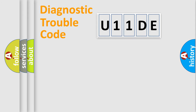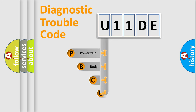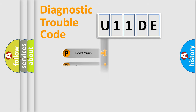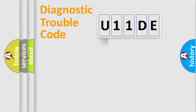Let's look at the history of diagnostic fault code composition according to the OBD-II protocol, which is unified for all automakers since 2000. We divide the electric system of an automobile into four basic units: Powertrain, Body, Chassis, and Network.